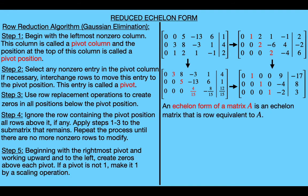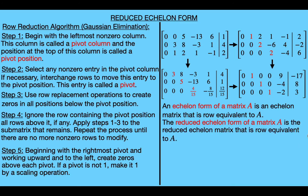This leads to some new terminology. We say that an echelon form of a matrix A is an echelon matrix that is row equivalent to A, and we say that the reduced echelon form of a matrix A is the reduced echelon matrix that is row equivalent to A. So any non-zero matrix will have multiple echelon forms, but exactly one reduced echelon form.